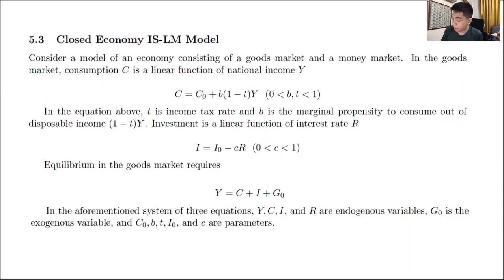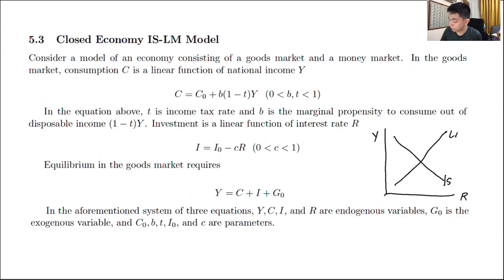If you recall the ISLM model, you have Y on the Y-axis and then you have the interest rate R. The IS curve is the downward sloping curve and you have an LM curve which is upward sloping. What is of concern is of course what Y* and R* end up being — the equilibrium level of national income and the equilibrium interest rate.